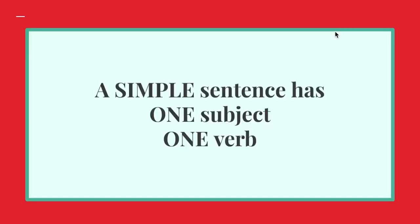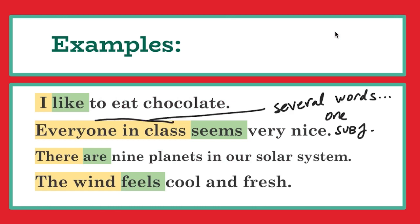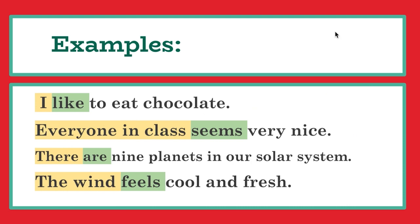A compound sentence is a special kind of sentence. Compare it to a simple sentence. A simple sentence has one subject, one verb. For example: I like to eat chocolate. Everyone in class seems nice. There are nine planets in our solar system. You notice all of these are simple present. They follow the rules of simple present: one subject, one verb.